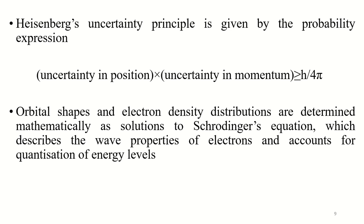This means that increased efforts to pinpoint an electron result in an increase in its momentum, or vice versa. Attempts to slow an electron effectively mean it could be anywhere. Given the limitations on determining the position and momentum of an electron, it is usual to talk about the probabilities of finding an electron in a particular place, quantified as electron density distributions. Electrons in atoms are located in atomic orbitals — for each orbital, one can only state the orbital shape and the probability of finding an electron at any point. Orbital shapes and electron density distributions are determined mathematically as solutions to the Schrödinger equation, which describes the wave properties of electrons and accounts for quantization of energy levels.